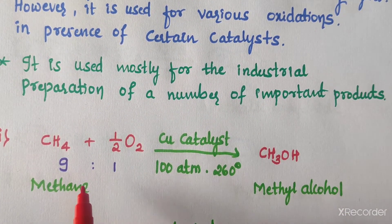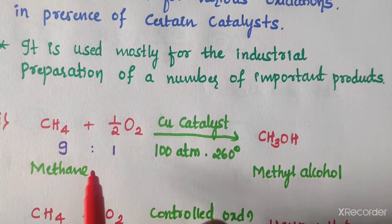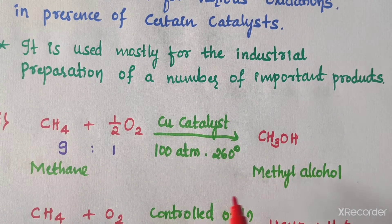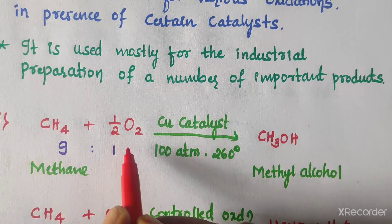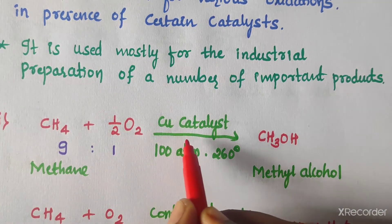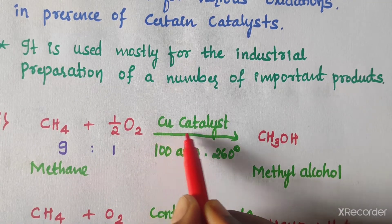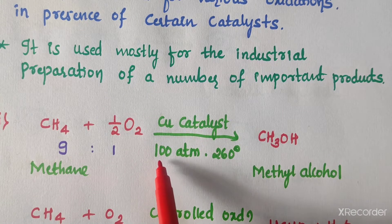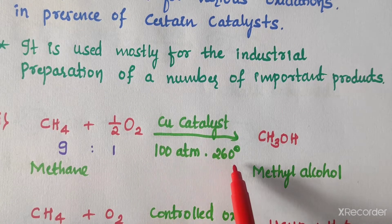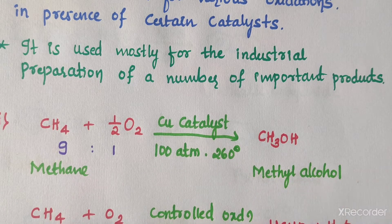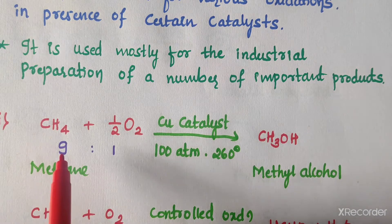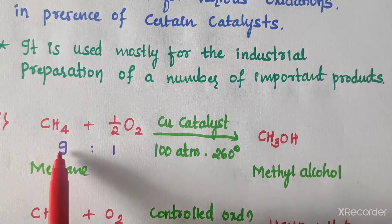Let us start with the example of methyl alcohol, which can be obtained from methane. Methane on oxidation with oxygen, under a copper catalyst, at 100 atmospheric pressure and 260 degree temperature, we can synthesize methyl alcohol — that is methanol. The ratio of methane and oxygen here is 9 to 1.